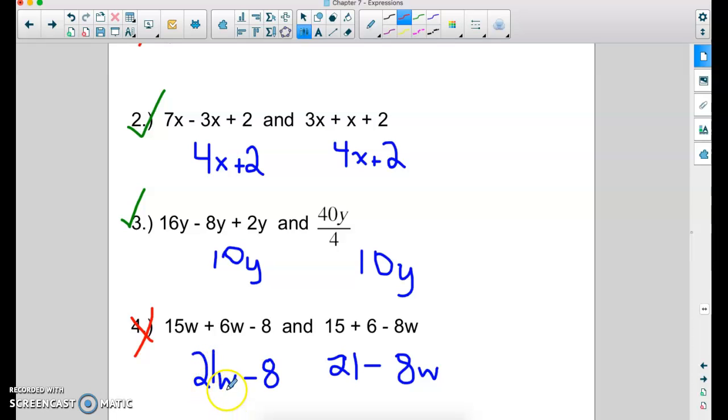In this problem, we have 21w's, and then we're subtracting 8. In this problem, we only have 8w's, and we're subtracting it away from 21. So no, these are not equivalent. All right, now that you have finished this video, go check Google Classroom for your next assignment.